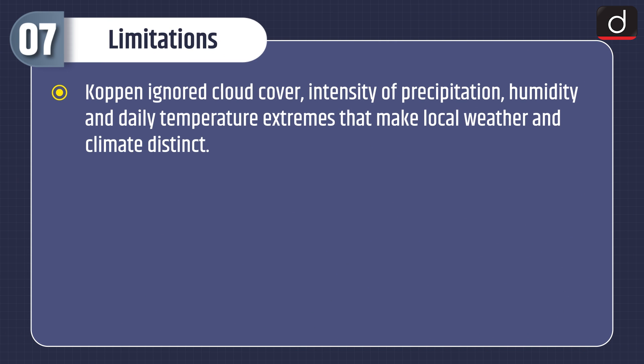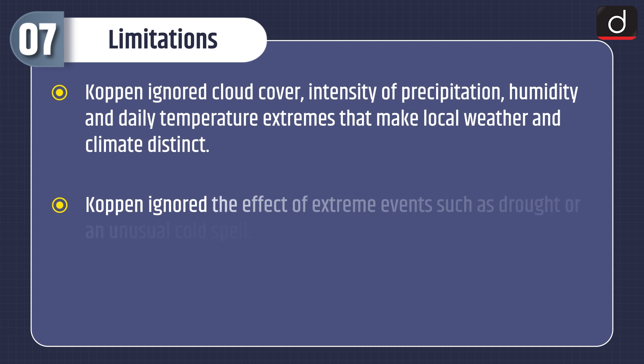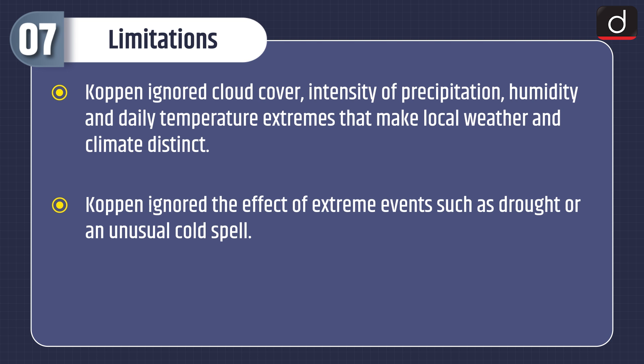Moving on to the limitations. Koppen ignored cloud cover, intensity of precipitation, humidity, and daily temperature extremes that make local weather and climate distinct. Koppen also ignored the effect of extreme events such as drought or an unusual cold spell.